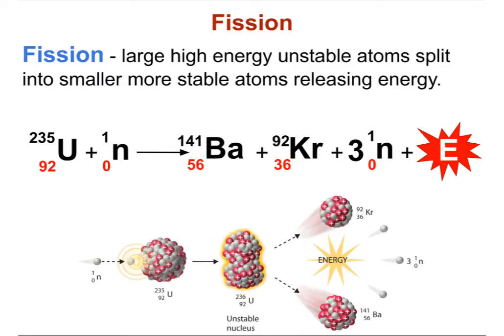To initiate — to start this split — we're actually helping. We're shooting a neutron into the big atom of uranium, which initiates the split of this big atom into two smaller ones, krypton and barium, and energy is released in the process, along with three neutrons.